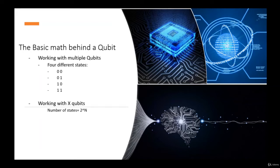Now we're working with x number of qubits. When we have two qubits, we can have four states. But if we have a random amount of qubits — say 50 qubits — how can we know exactly the number of states that we can have? How much states is it possible to have, and how complex is it to quantum compute all those states? It's pretty simple: we use the formula 2 to the power of n, where n is the number of qubits.